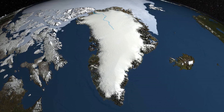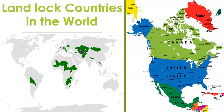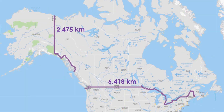Greenland is also home to the second largest ice sheet, covering 82% of Greenland. There are no landlocked countries in North America — every single country has access to the ocean. Canada and the United States of America have the longest international border in the world, with 8,893 kilometers.